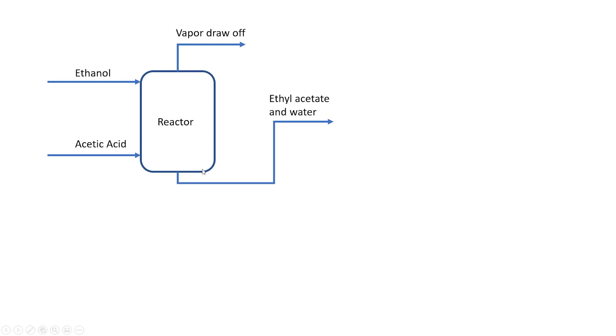This process involves a reactor where acetic acid and ethanol are reacted to equilibrium. This reaction occurs in two phases with the vapor draw off.